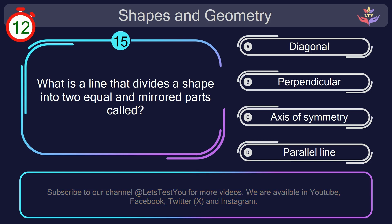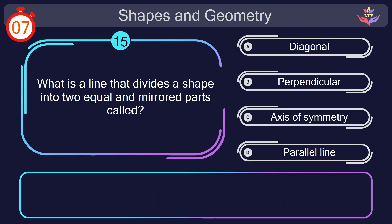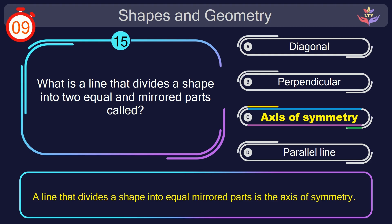Question number 15. What is a line that divides a shape into 2 equal and mirrored parts called? Your countdown started. Here we go. The correct answer is option C. Axis of symmetry. A line that divides a shape into equal mirrored parts is the axis of symmetry.